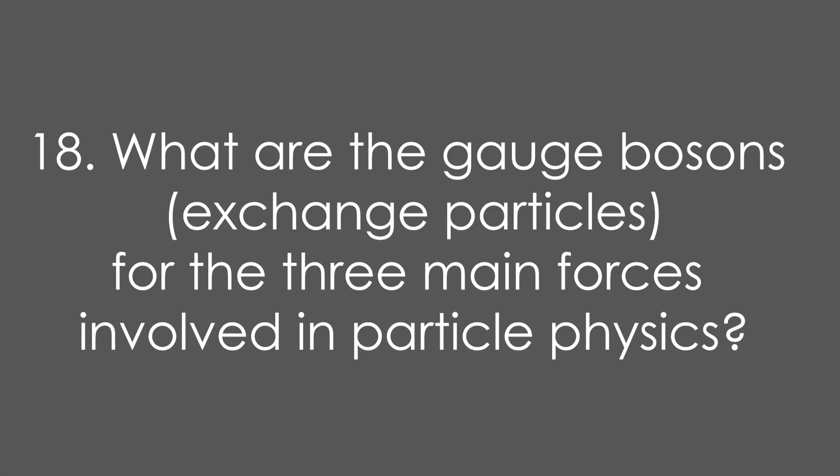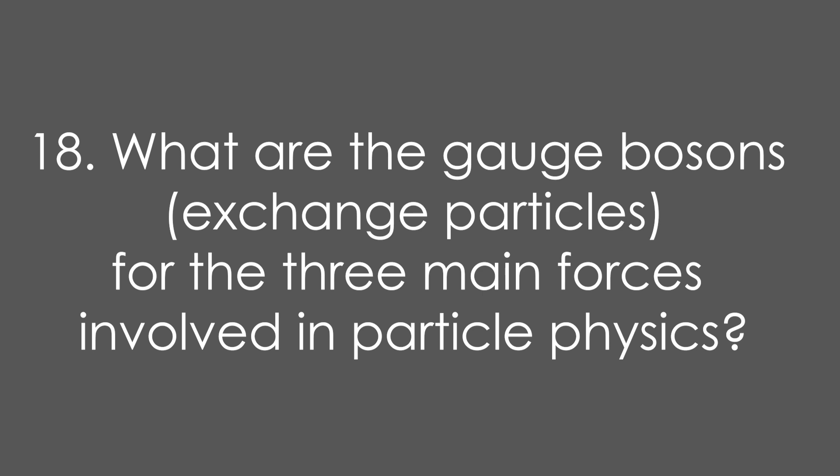18. What are the gauge bosons, or exchange particles, for the three main forces involved in particle physics? For electromagnetic, it's the virtual photon. For strong, it's the pion. Sometimes you'll see gluon instead. And for weak, it's W plus or W minus boson. We're forgetting the Z zero boson, and also gravity.